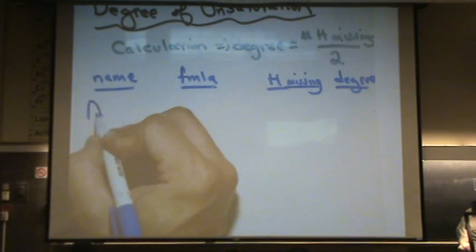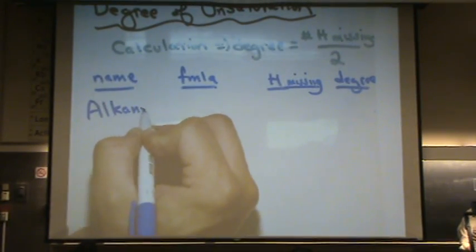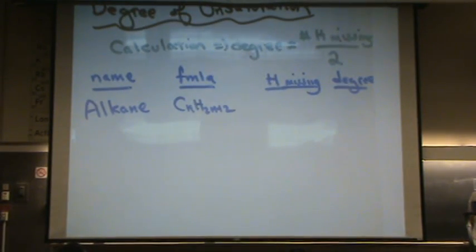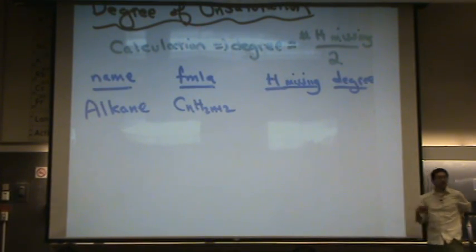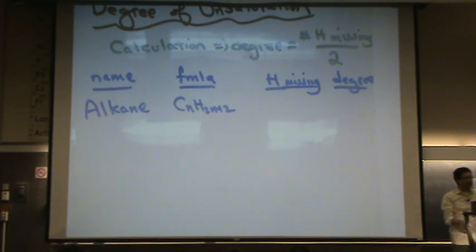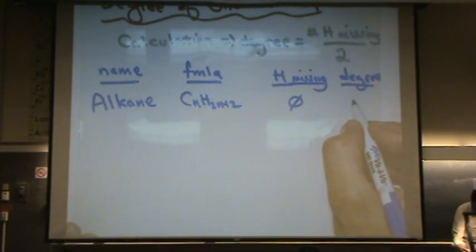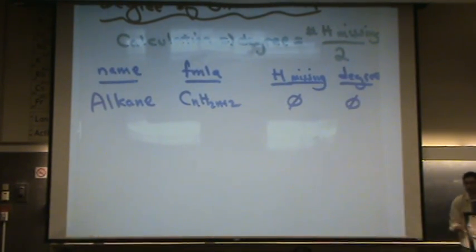For example, let's take an alkane. Its formula is CnH2n plus 2. This is a fully saturated hydrocarbon, and so there are no more possible H's that can get on here. All the carbons have their octets. This is the example of the fully saturated, completely filled with hydrogens family. And so the degree of unsaturation is 0 divided by 2 is 0.